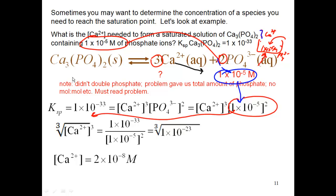So that means if I add 2×10⁻⁸ molarity of calcium — and that could be in any format: calcium chloride, calcium acetate, whatever it may be — when I get the concentration of calcium up to 2×10⁻⁸ and I already have 1×10⁻⁵ phosphate, I will be at the saturation point. Then I will precipitate out calcium phosphate. Once the concentration of calcium gets to 2×10⁻⁸, I will precipitate out my salt.